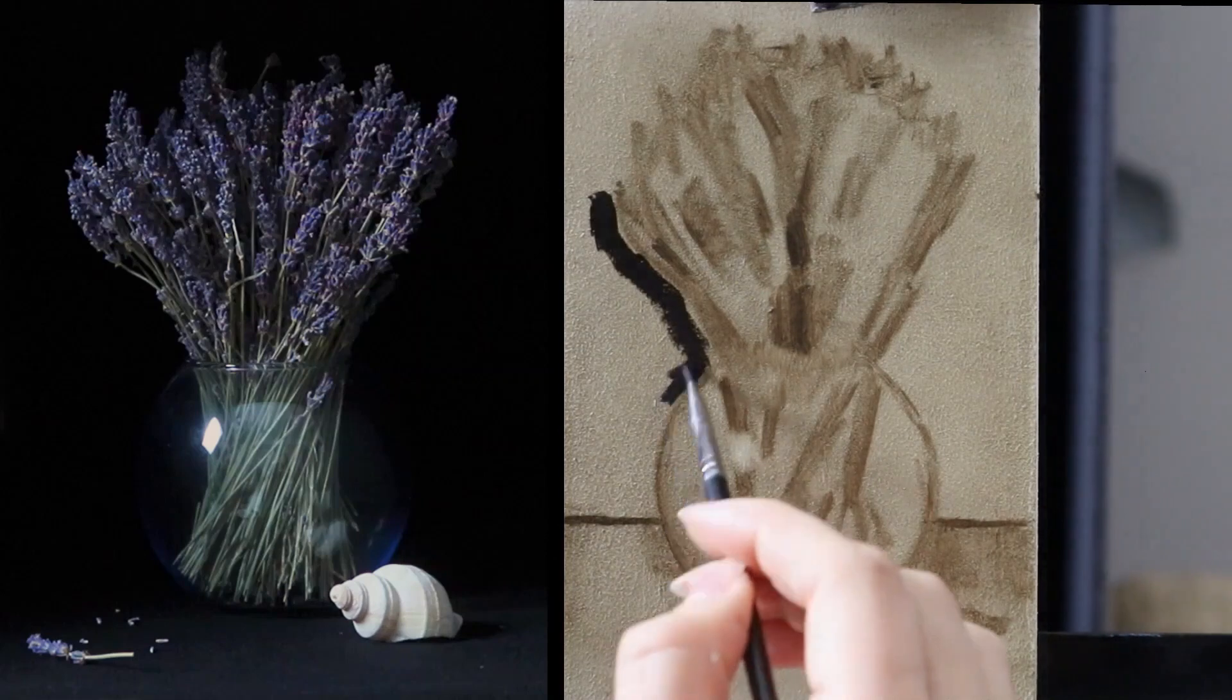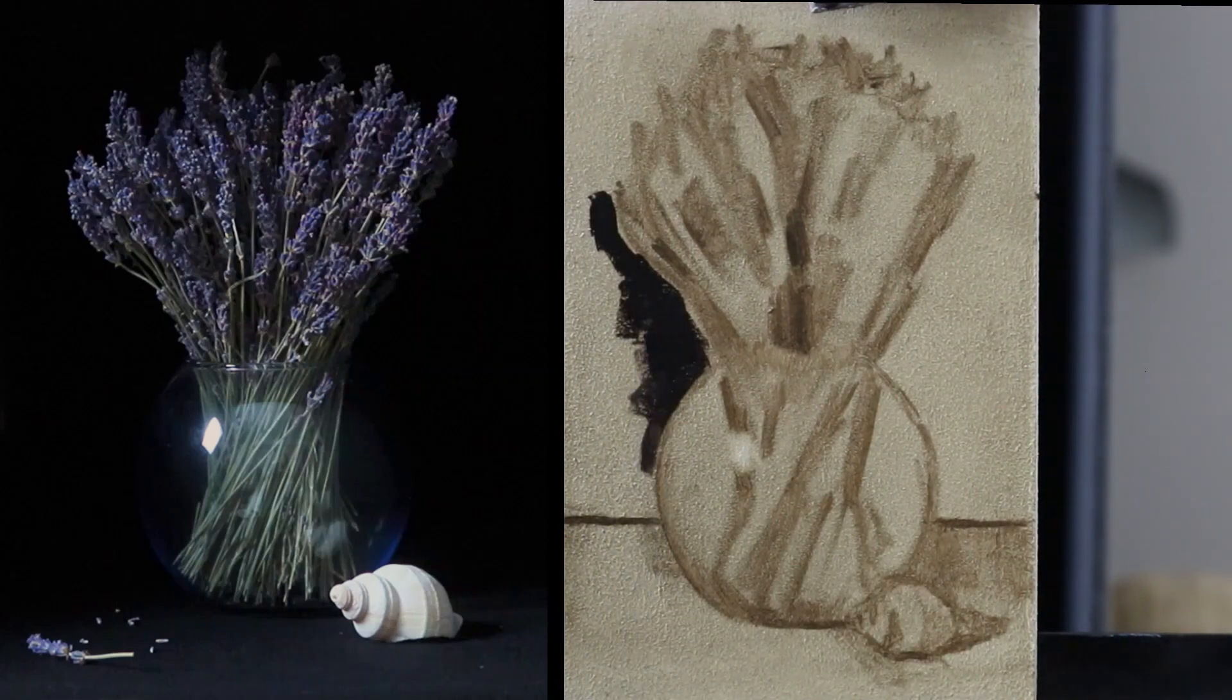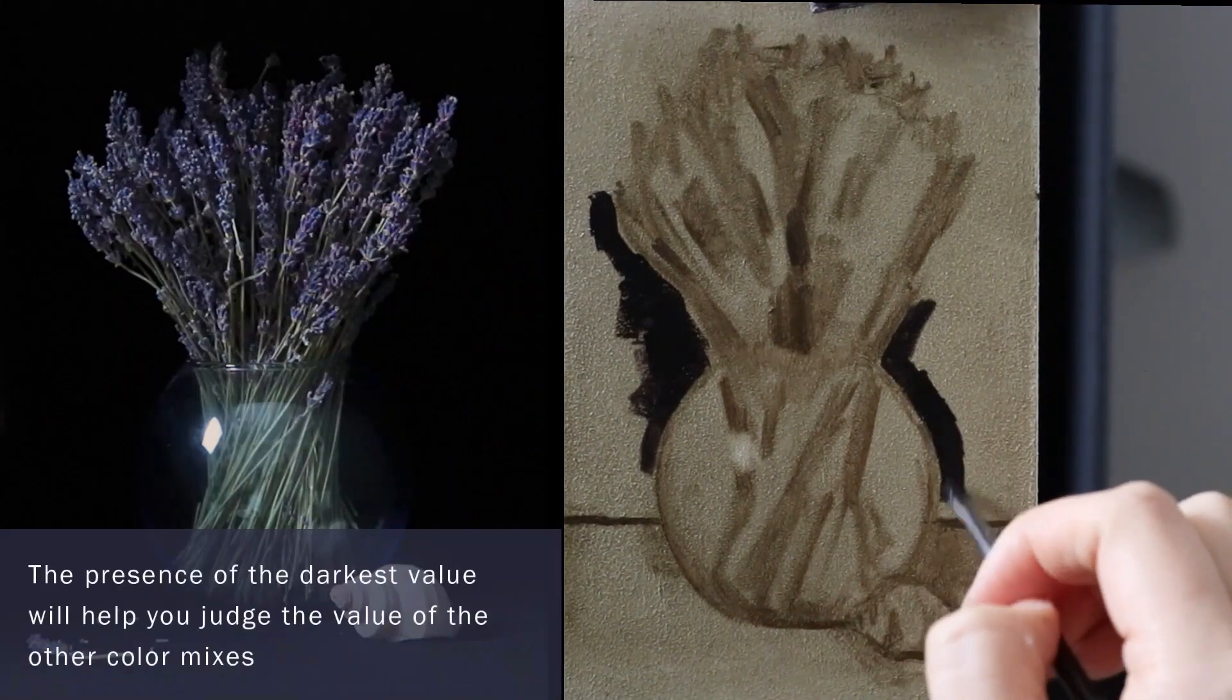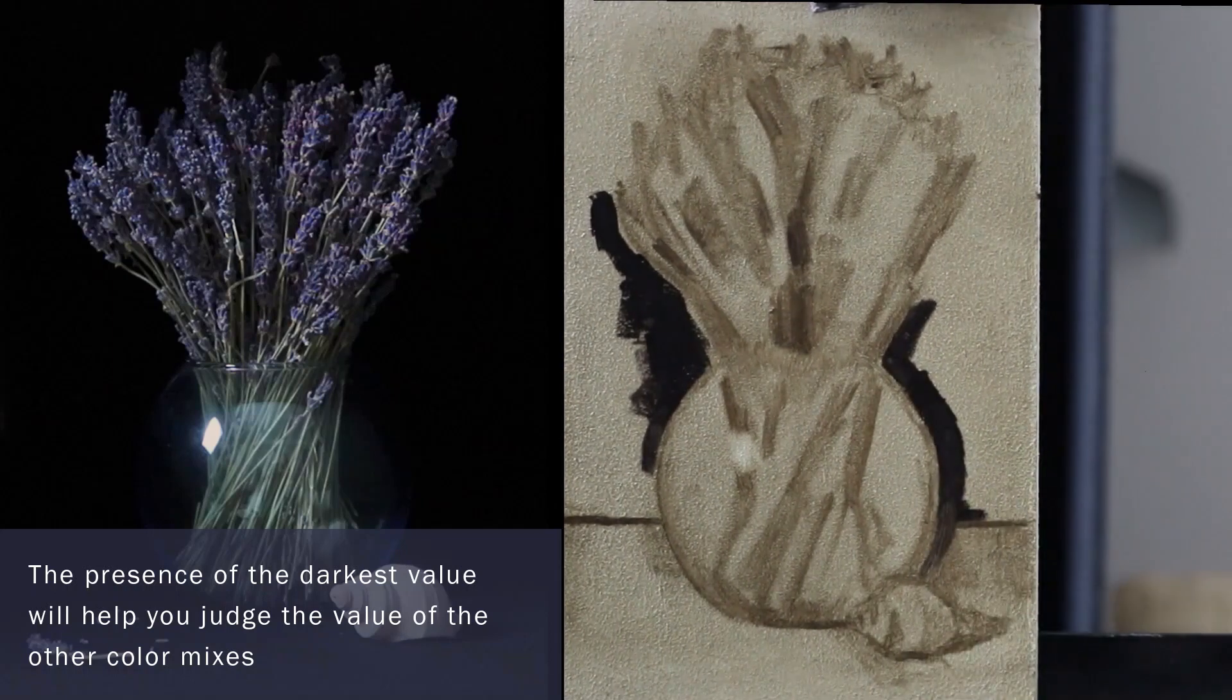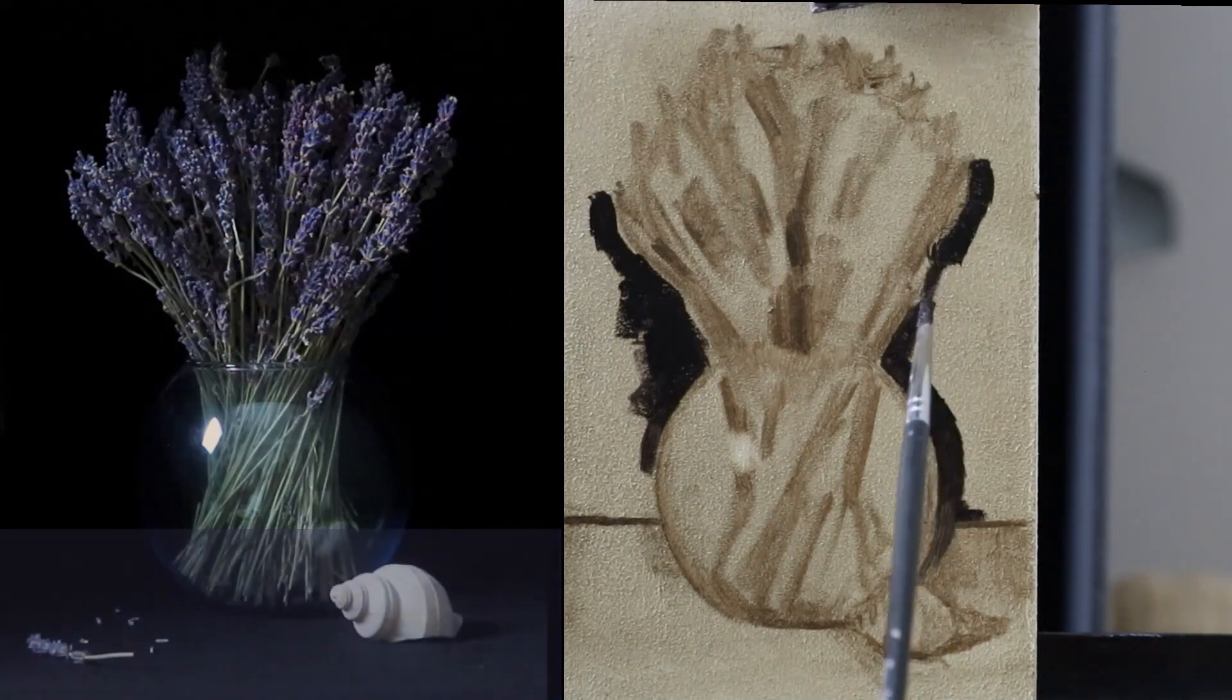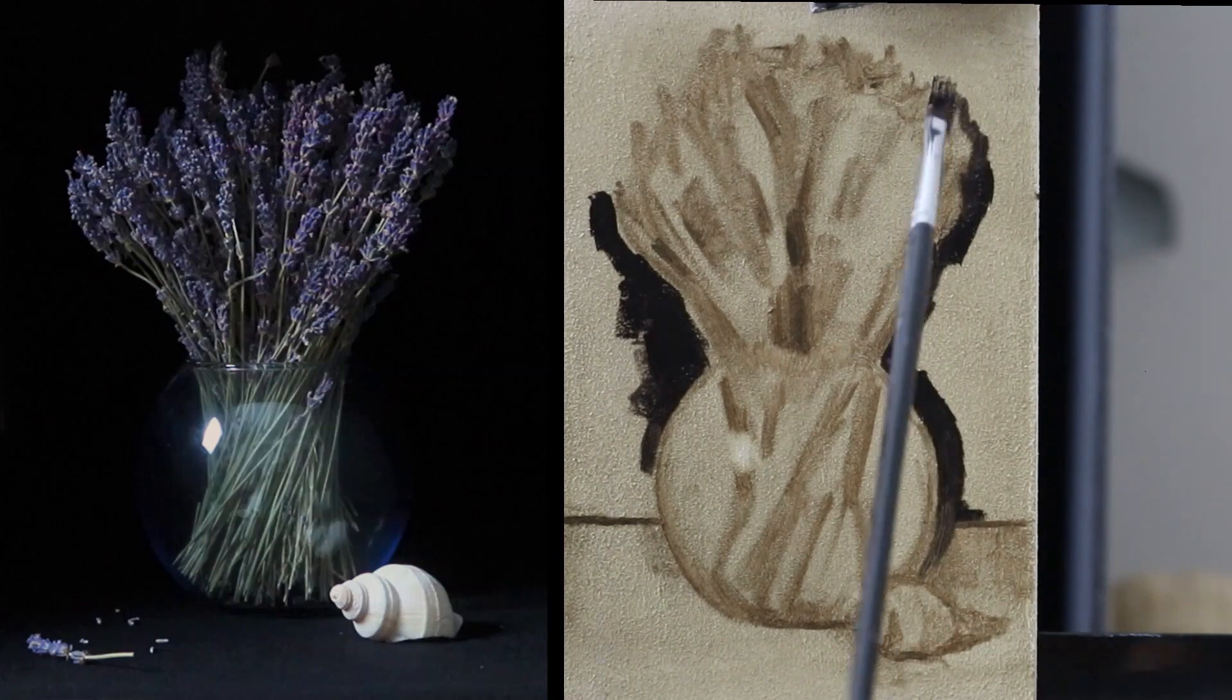After I have a simple drawing of the setup I then start adding on the colors. The first thing I do is to fill in some of the background. This is because the background holds the darkest value. When I have established this in the painting I can use this dark value to relate the other values to. This will make it easier to decide the contrast and to immediately get a light effect going in the study.